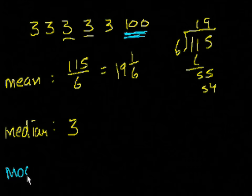And then finally, the mode. What is the most common number in the set? Well, there's five 3's and there's 100. So the most common number is, once again, it's a 3.